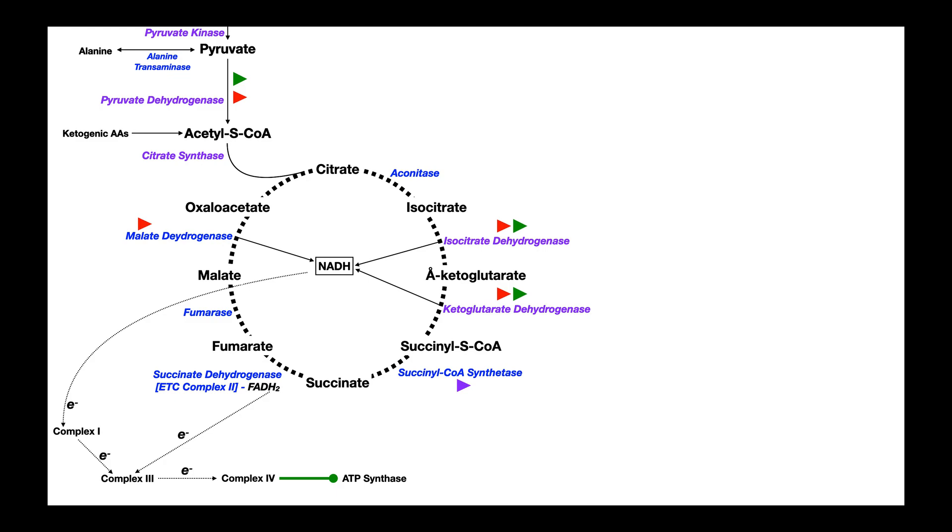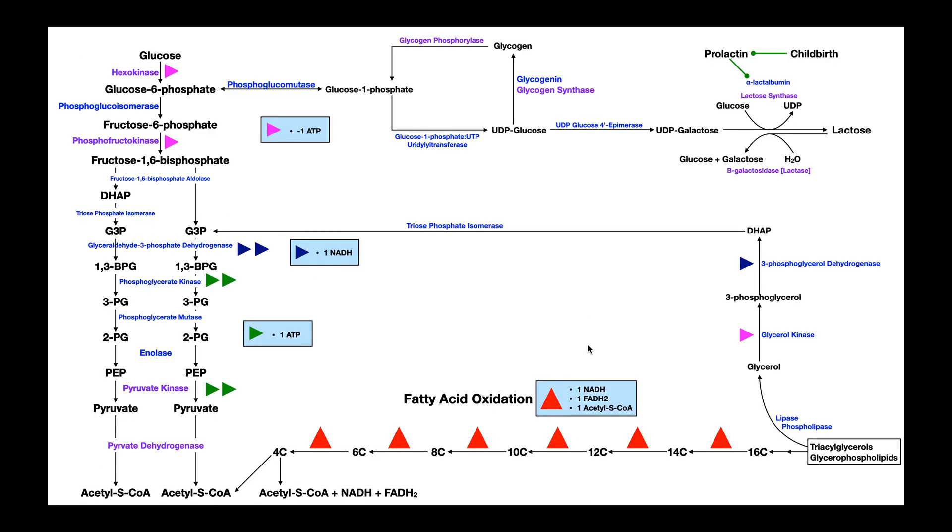So now we're going to look at some other metabolic pathways and see how they fit into the big picture of basic metabolism. Now the first one we're going to look at here is really just beta-oxidation. Now this doesn't look much like beta-oxidation, but remember we talked about this in the very first video of this series.